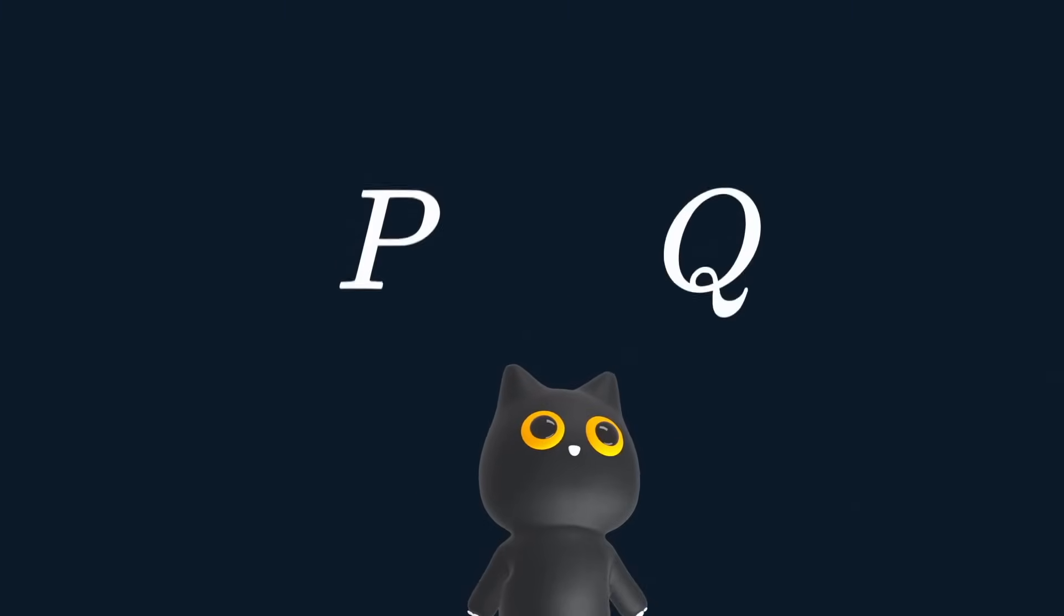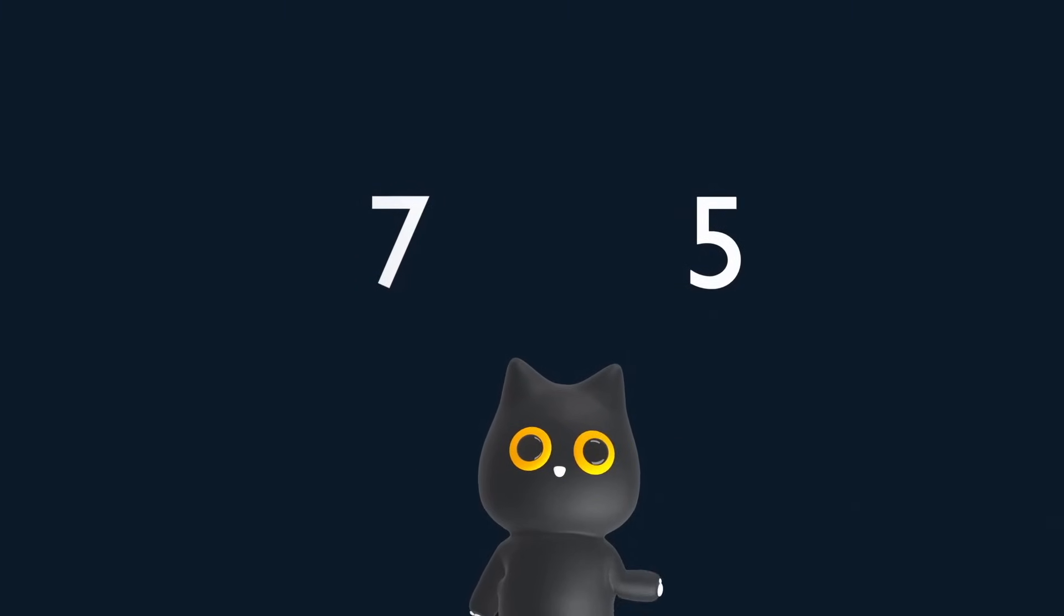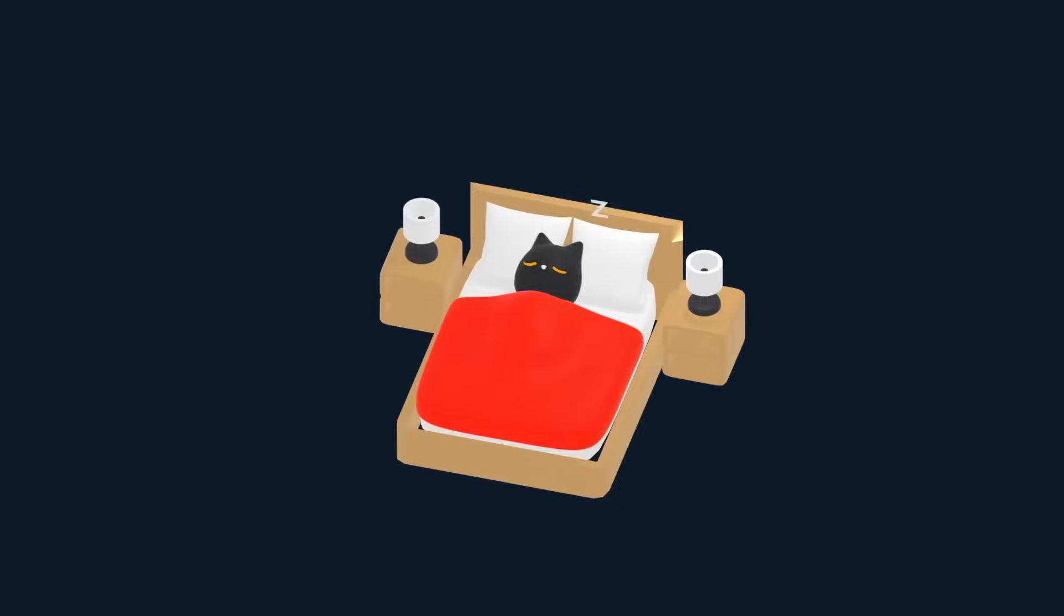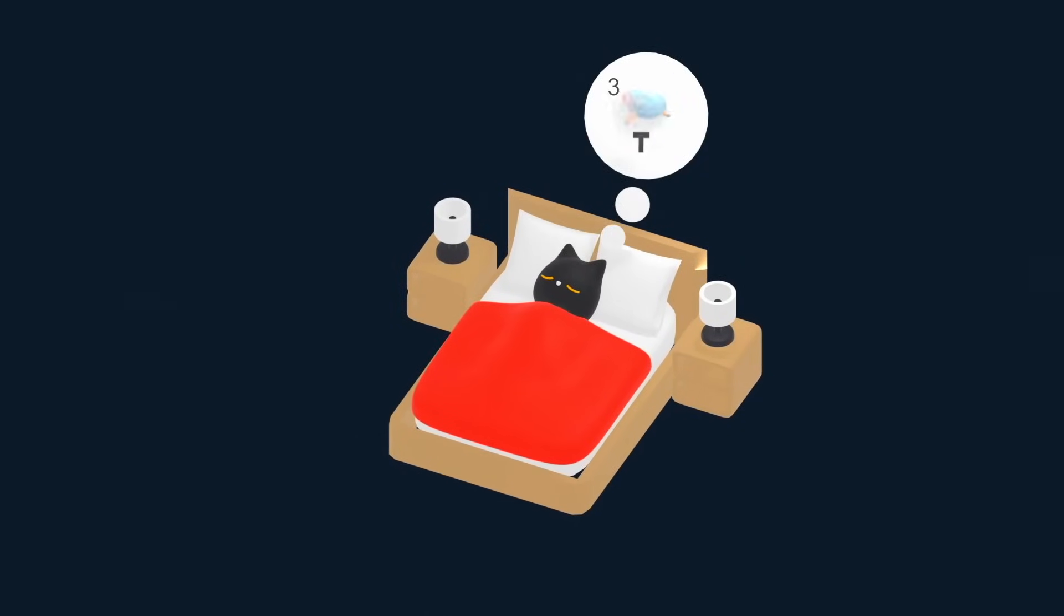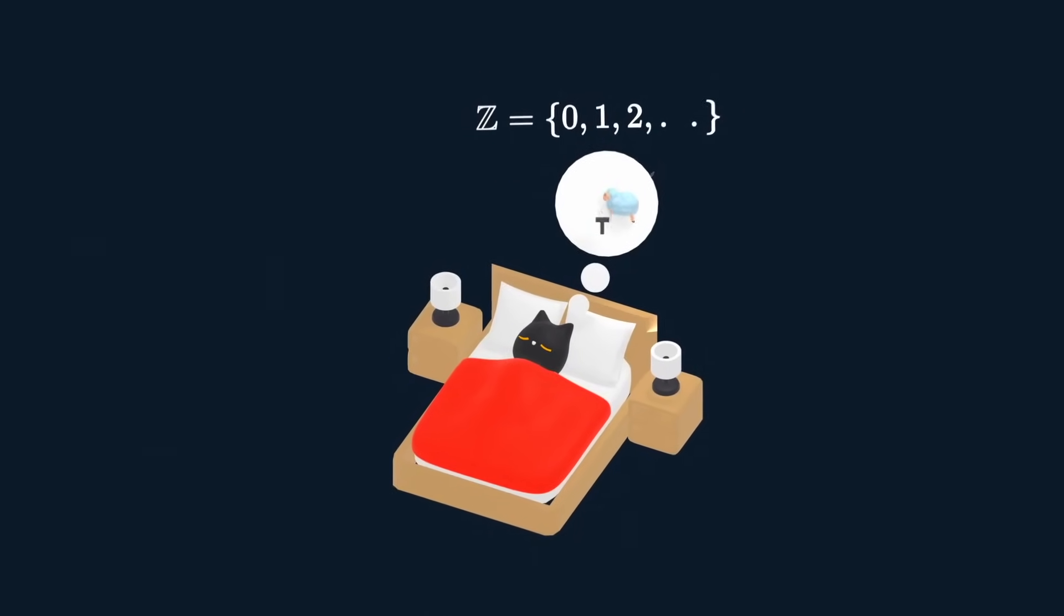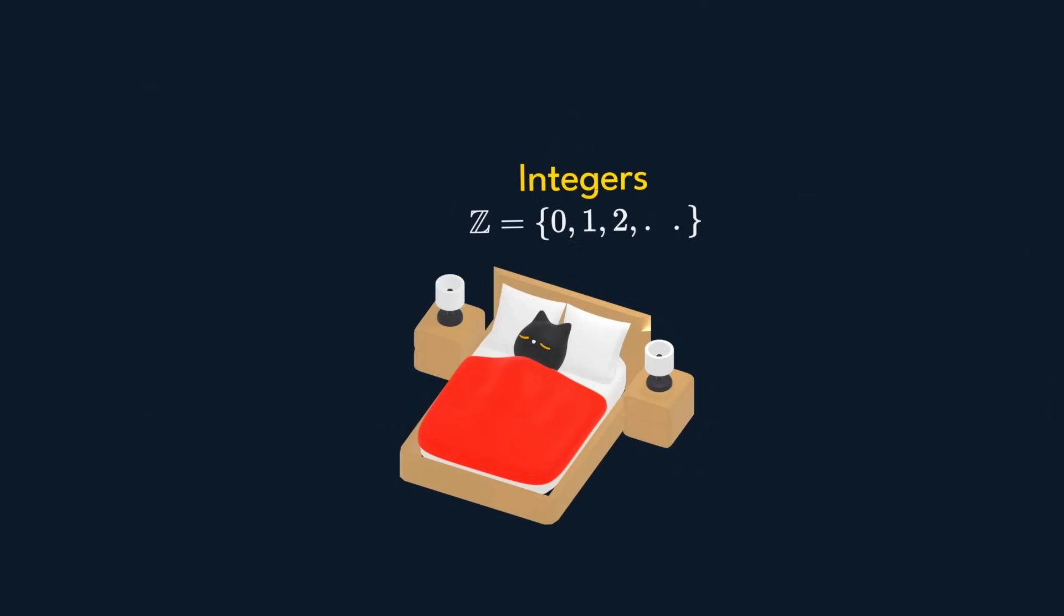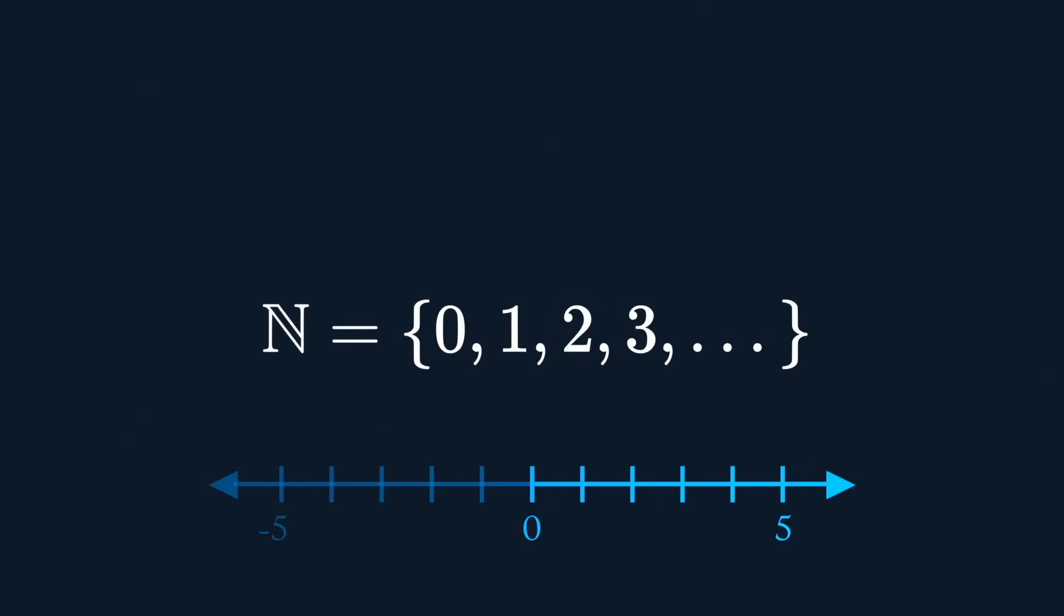Enough dealing with just P's and Q's. Let's get to some numbers, shall we? Remember the thing you do to fall asleep? You know, counting sheep? Well, these numbers are known as integers. There are positive integers and negative integers. Positive integers, including zero, are known as natural numbers.